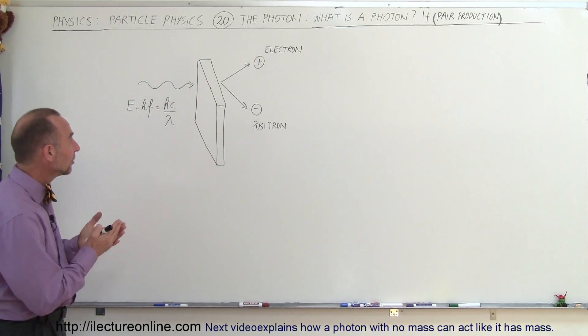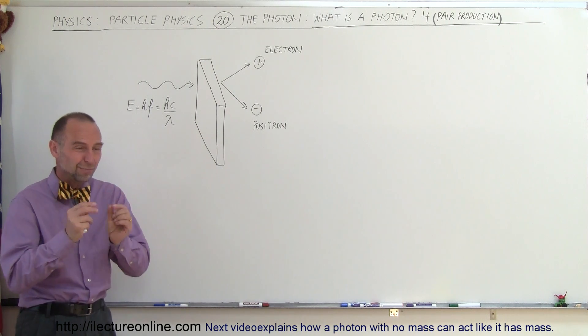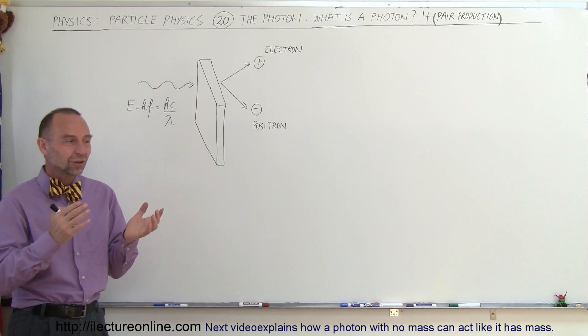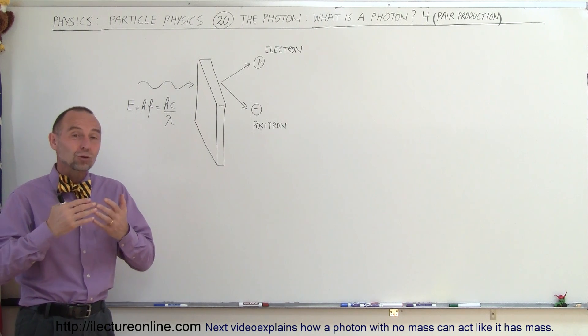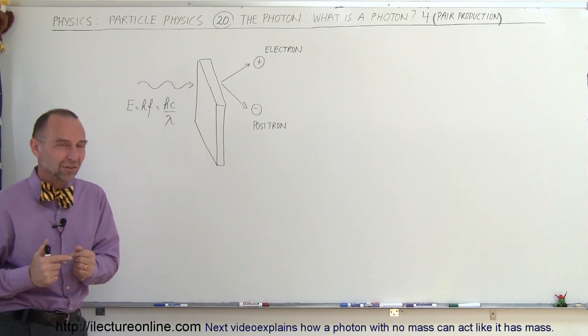A photon, which is a chunk of energy, a piece of energy that has no mass, can somehow convert itself into two particles that have mass.